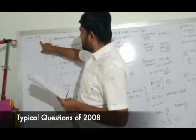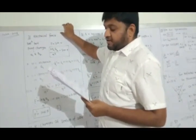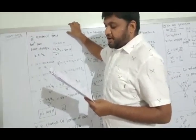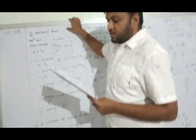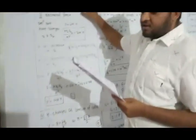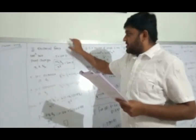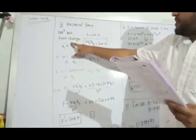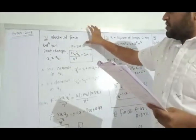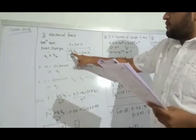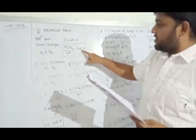Typical questions of paper 2008, question number 2. It is given that the electric force between two point charges is 200 Newton. If two point charges are Q1 and Q2, the force is 200 Newton. By Coulomb's law, the force is K·Q1·Q2/R² = 200 Newton, where R is the separation.